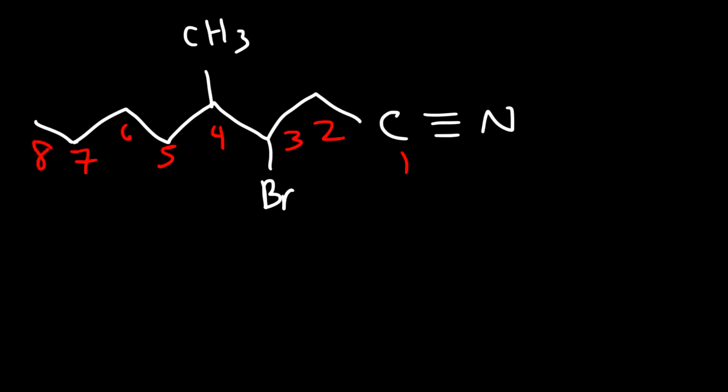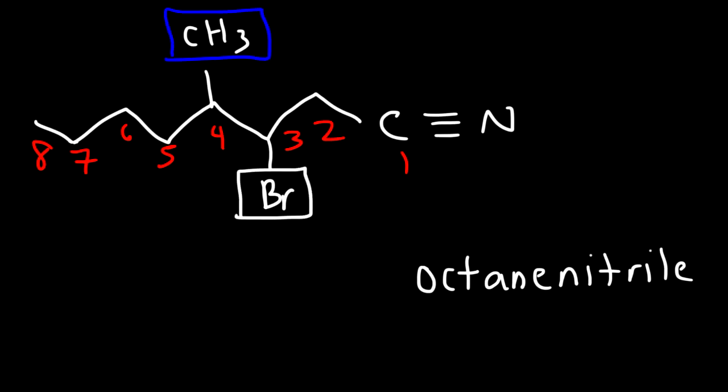Now let's work on this example. So let's say if we have a bromine atom and a methyl group. Go ahead and name this molecule. So we have a total of 8 carbons. So this is going to be called octane nitrile. On carbon 3, we have a bromine atom. And on carbon 4, we have a methyl group. So B comes before M. Therefore, this is going to be 3-bromo-4-methyl-octane nitrile. And so that's it for that example.